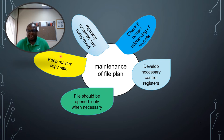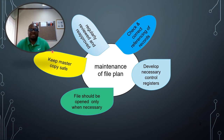The master copy serves as evidence because the approving authority may come and request proof. They may not always know whether your file plan was approved, especially given the number of file plans they've been approving. You will be able to use the master copy to prove that your file plan was approved.